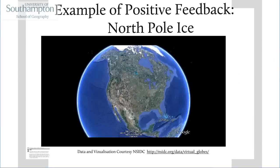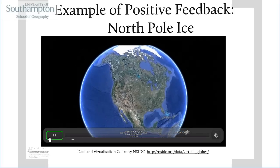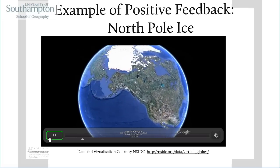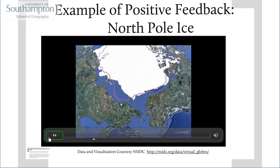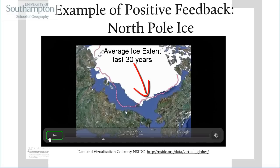Let's look at an example of positive feedback in the Earth's climate. What we're going to do is fly over from North America, up over the top of Alaska, and fly in to the North Pole. What you can see on screen is the white represents the sea ice floating on the sea at the North Pole.